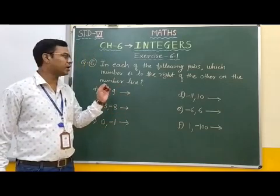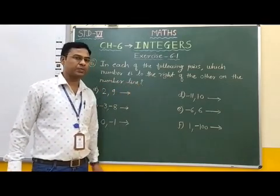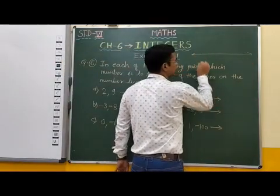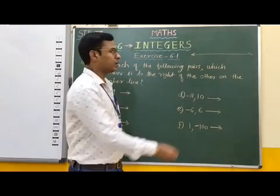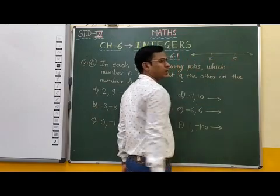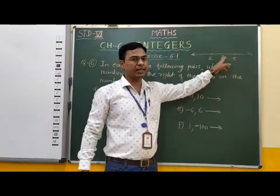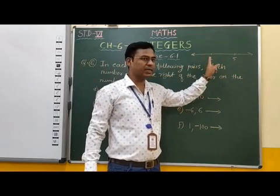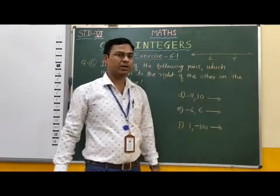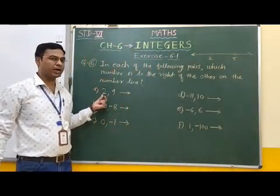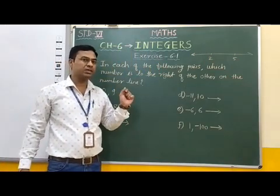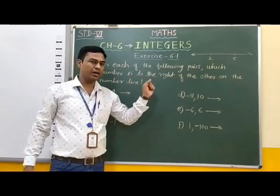By direct observation, we can write which number is to the right of the other number. Students, we know that on a number line, if we take two different numbers, suppose 2 and 5, then the right side number is greater than the left side number. Or we can say that the left side number is smaller than the right side number. Therefore, if we find out the greater number among the two, then that number is to the right of the other.